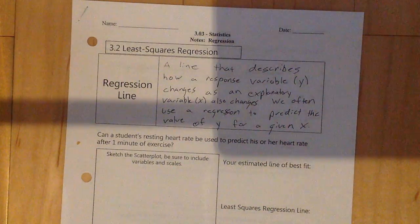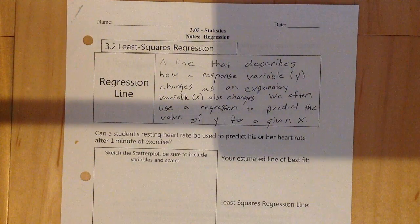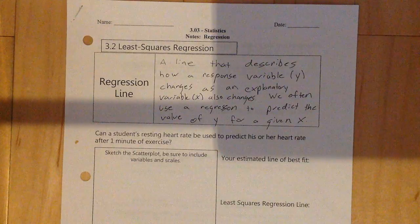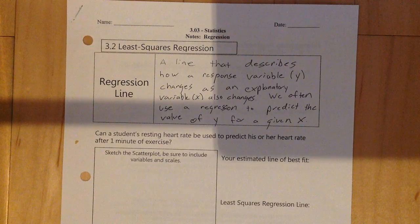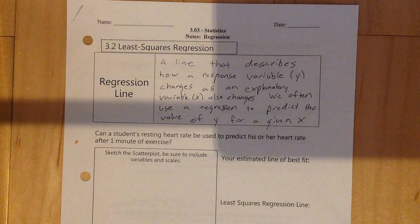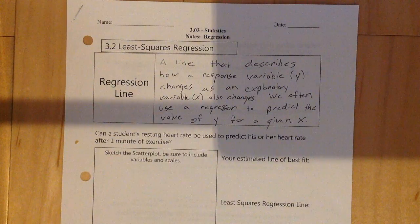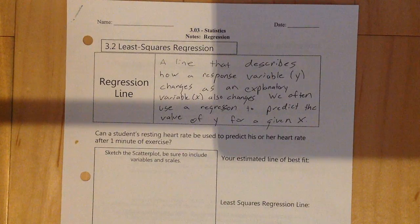The general idea is that you look at what has happened in the past — what is the relationship between these two variables? We model that relationship with an equation, and then we use that equation to make predictions about what will happen in the future. If we think this relationship is still true, we can use it to predict what's going to happen.